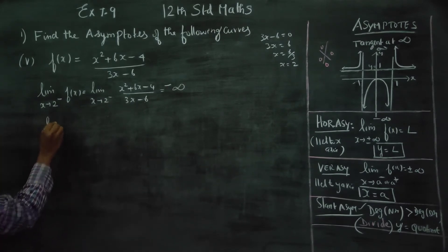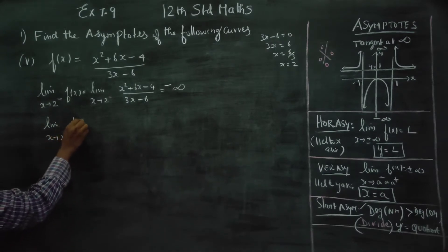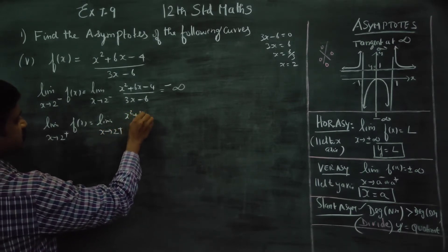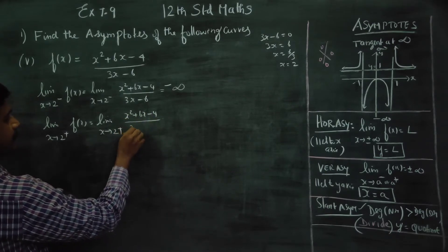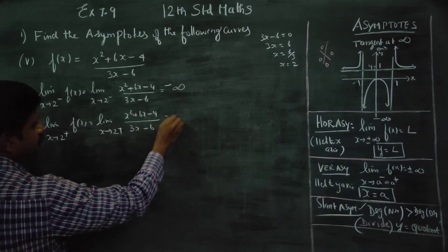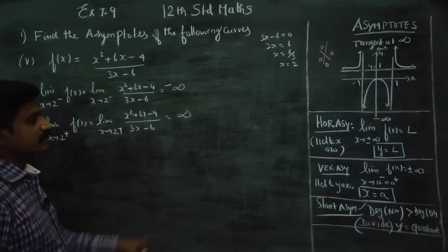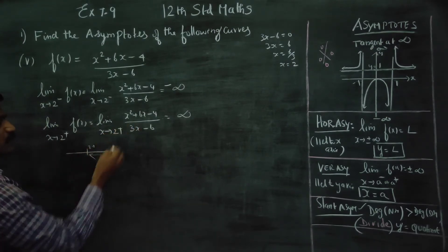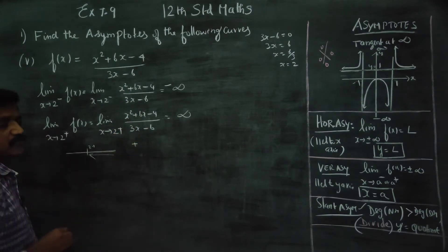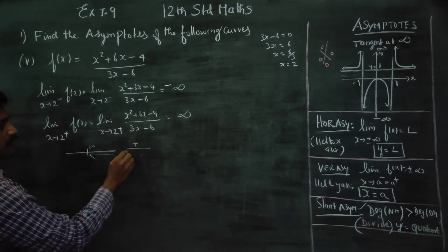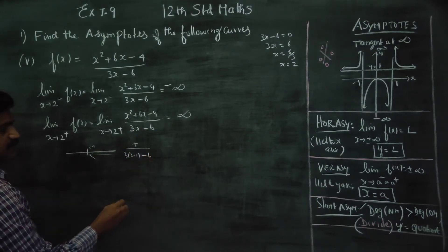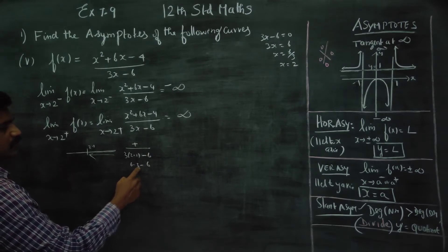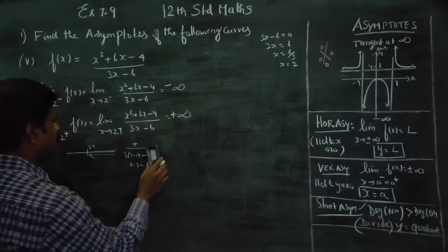Now for the right-hand limit: limit as x approaches 2 from the right of f(x) = (x² + 6x - 4) / (3x - 6). Substituting x = 2.1: the denominator is 3(2.1) - 6 = 6.3 - 6, which is positive. Therefore the right-hand limit is plus infinity.